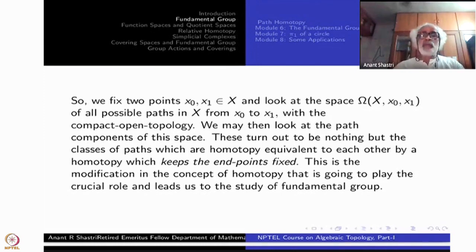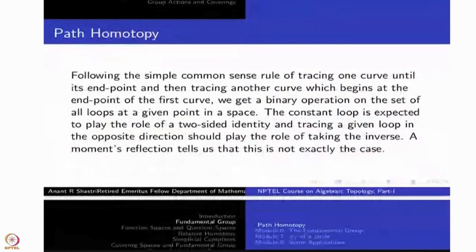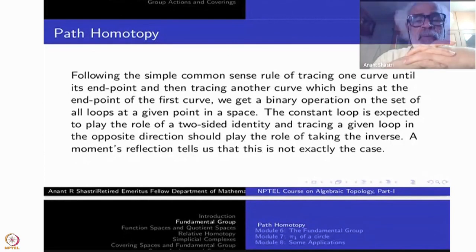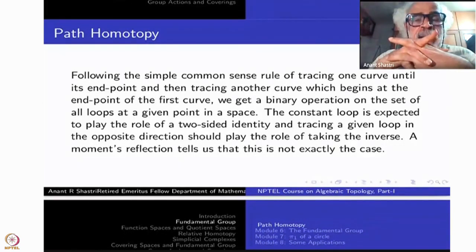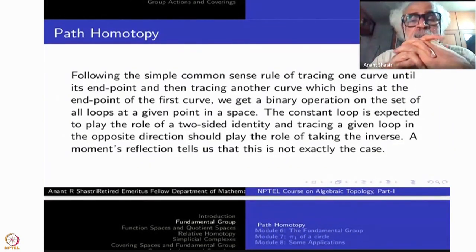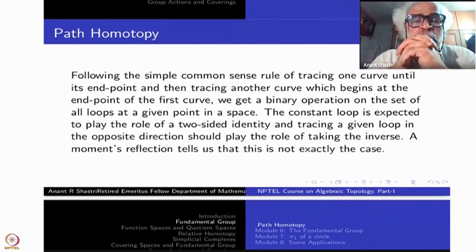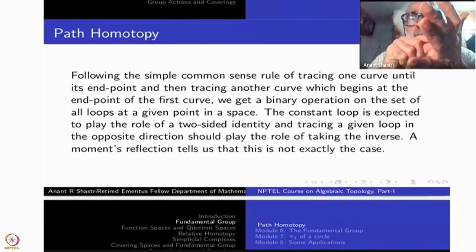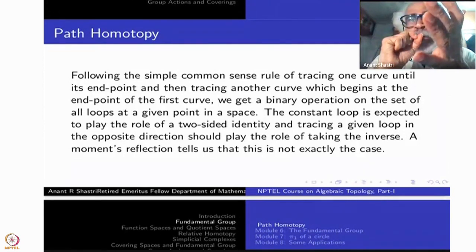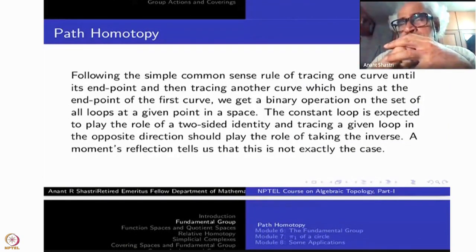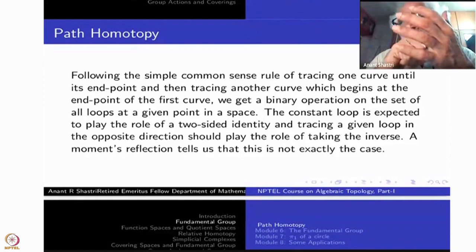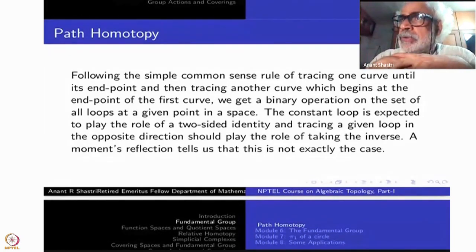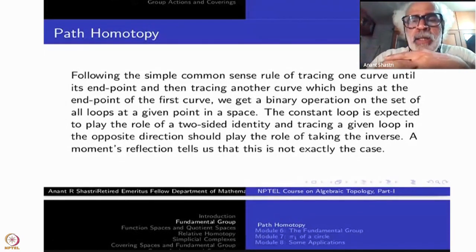So this leads to the concept of fundamental group of the space X. So let us introduce this concept of path homotopy, following the simple common sense rule of tracing one curve until its end point and then tracing the another curve which begins at that point. We get a binary operation on the set of all loops at a given point in a space. Take a point and then look at a loop at that point means the end point and the starting point are the same. x_1 is equal to x_0. Take that special case. Then take a loop. Take another loop. You can compose it by this method. It's called concatenation of the loops, which is just the extension of homotopy that we have done.